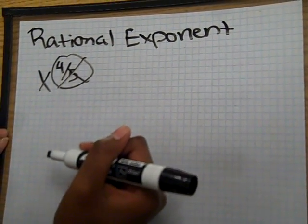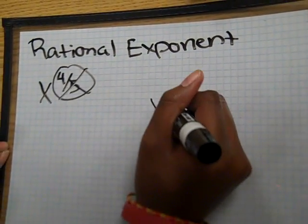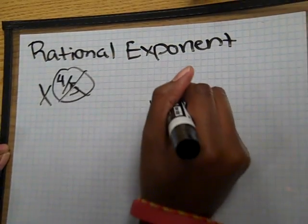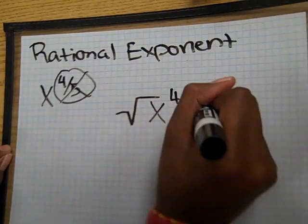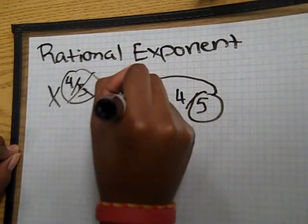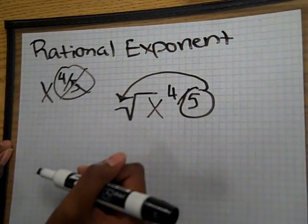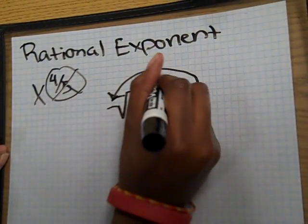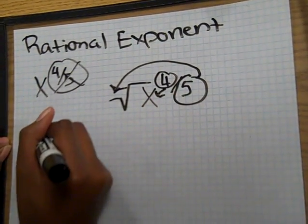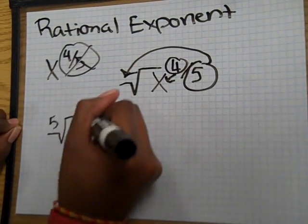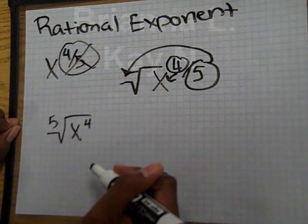To do this, we have to move the denominator over to the square root. So, 4 over 5, we have to move the 5 over here. We keep the numerator 4 with the x, so it looks like this. And that's it.